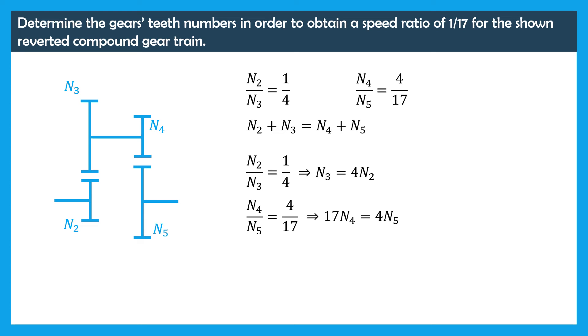The third equation reads N2 plus N3 is equal to N4 plus N5. We can substitute terms: N3 can be substituted by 4N2, and the term 4N5 can be substituted by 17N4. Consequently, we have 5N3 is equal to 21N4.